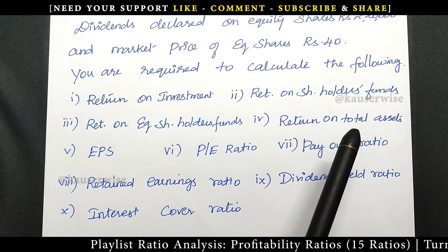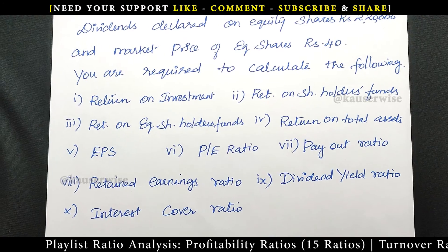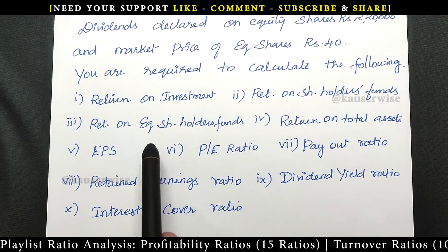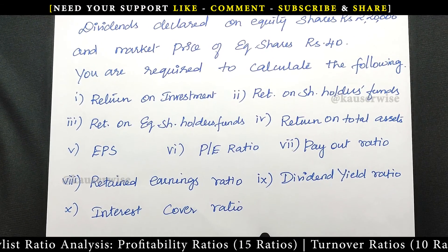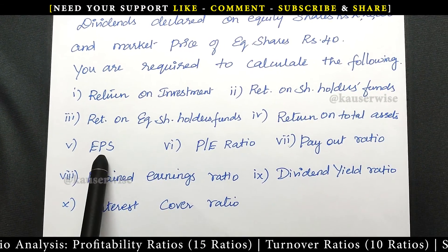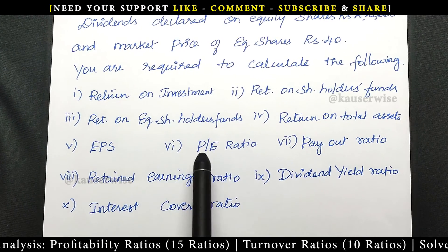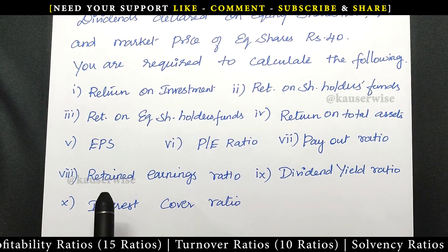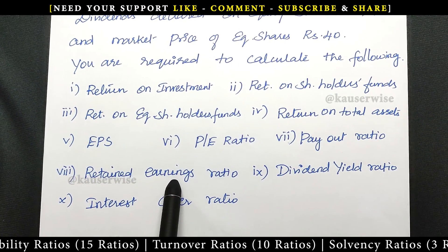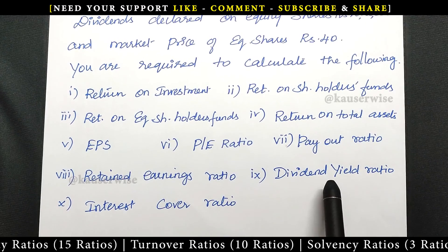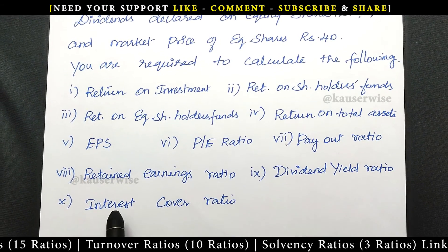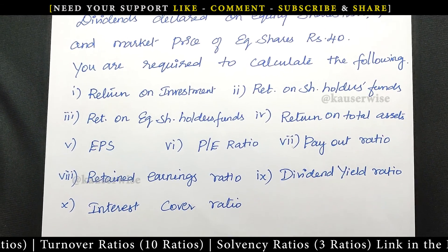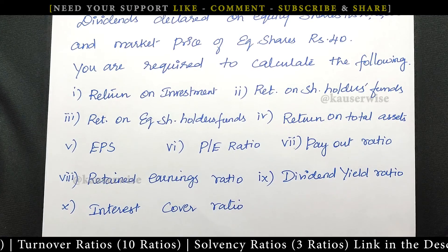The link is available in the description box. Now in this video we are going to learn the remaining profitability ratios: earning per share, price earning ratio, payout ratio, retained earnings ratio, dividend yield ratio, and interest cover ratio. Now let's get into the video.